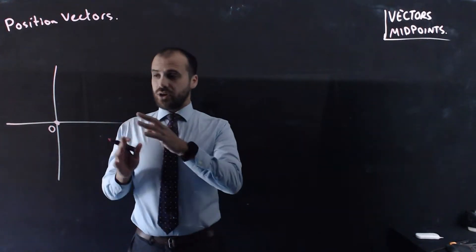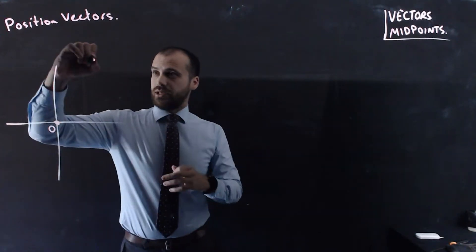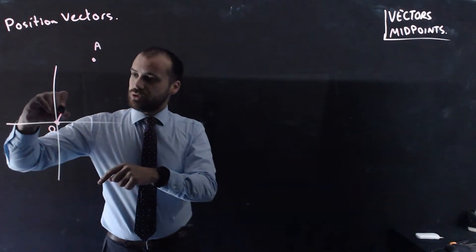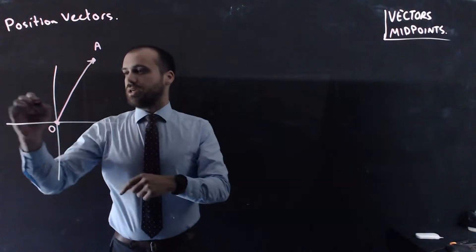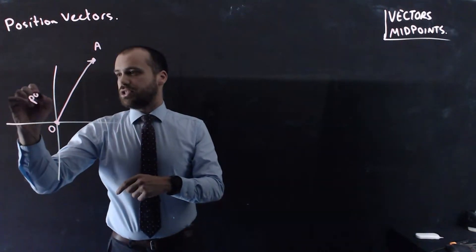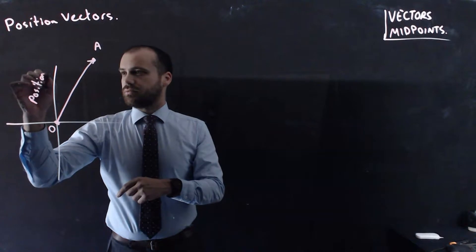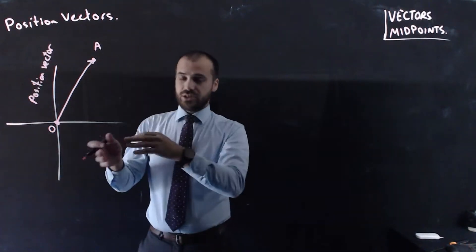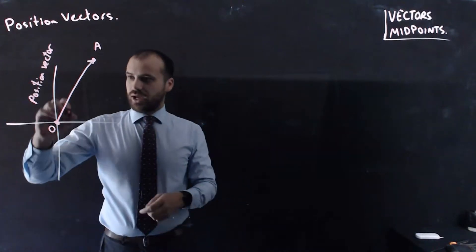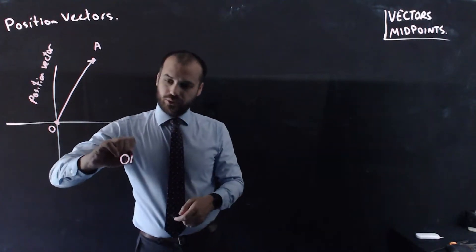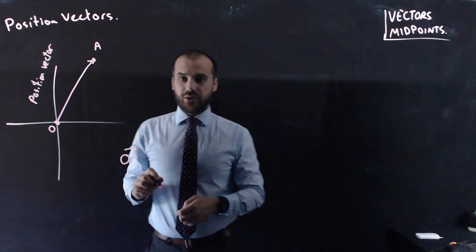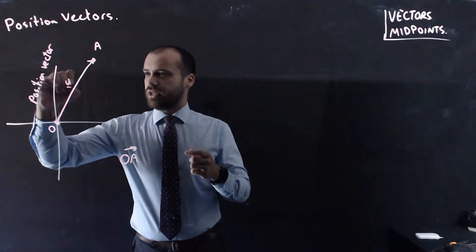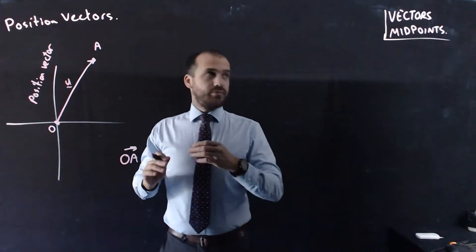This is the origin, which we call O. Now, if I create a point here, let's call it point A, the vector from the origin to point A is called a position vector. Now, this particular position vector, OA, I can just write it as OA with an arrow. Now, just for the ease of writing things, I'm just going to call it vector U for now.